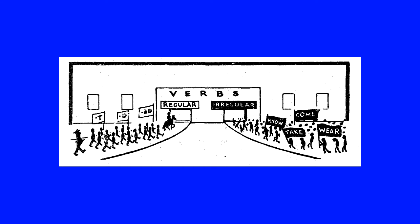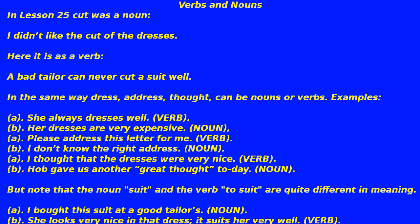Verbs — regular and irregular. Verbs and nouns: in lesson 25, 'cut' was a noun — 'I didn't like the cut of the dresses.' Here it is as a verb: 'A bad tailor can never cut a suit well.' In the same way, 'dress,' 'address,' and 'thought' can be nouns or verbs. Examples: (a) She always dresses well — verb. (b) Her dresses are very expensive — noun.